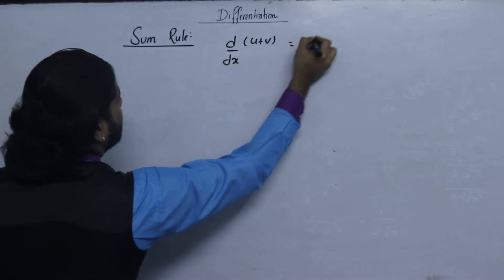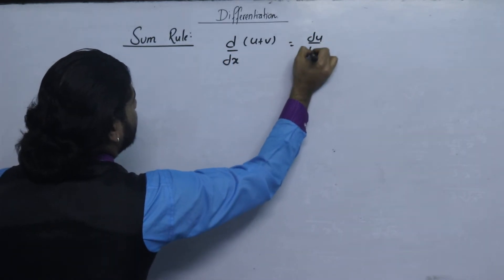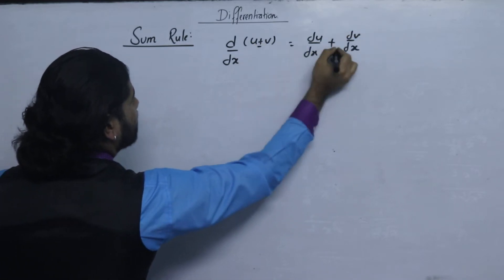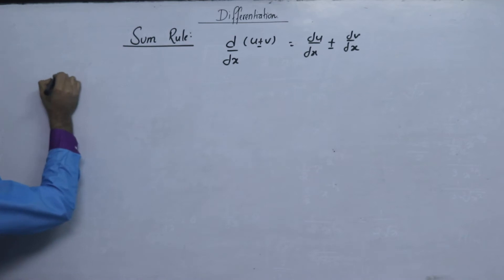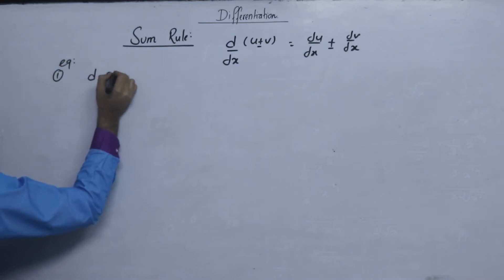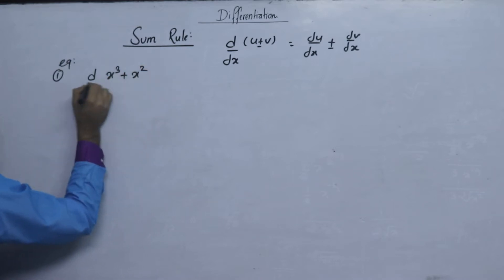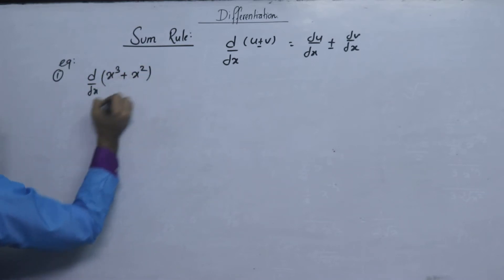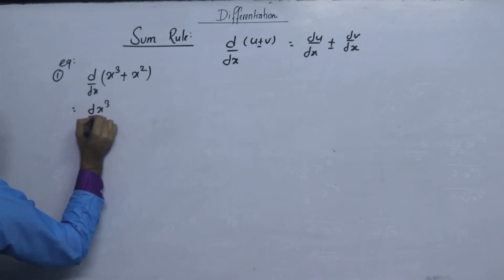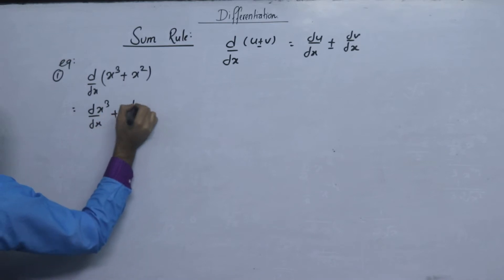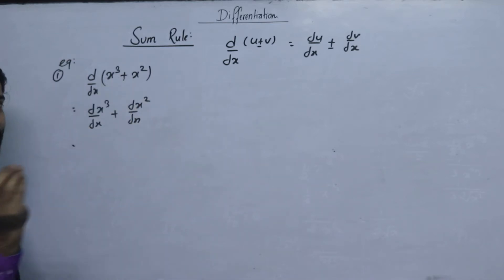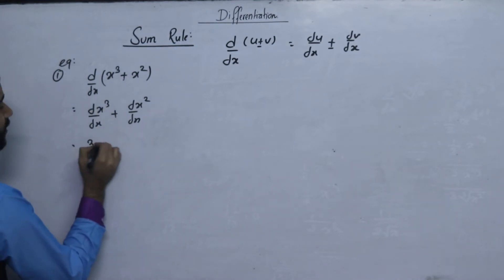I will separate. Differential of u dx plus dv with respect to dx. I will use some rule. x cube plus x square.